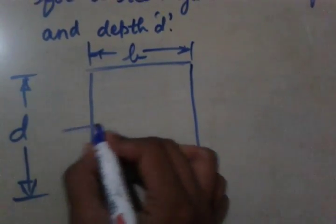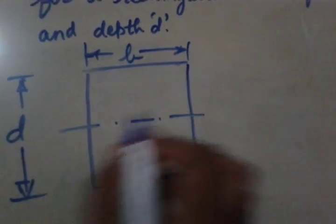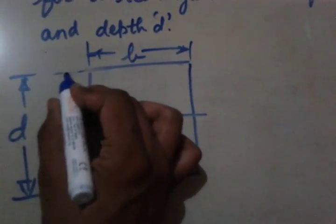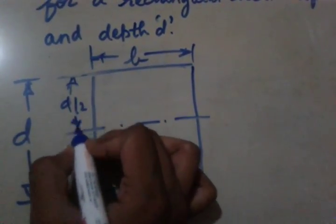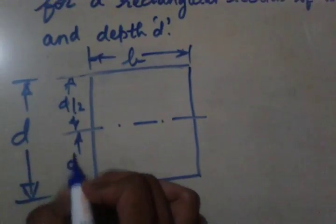So this is a rectangular section and this is the center line. So this will be D by 2 and this will also be D by 2.